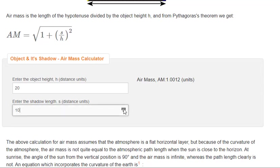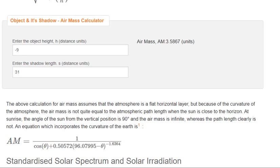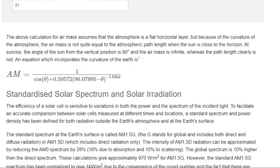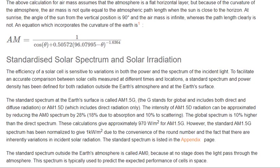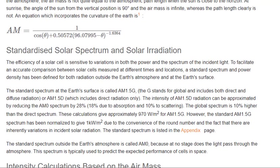The global spectrum is 10% higher than the direct spectrum. These calculations give approximately 970 watts per square meter for AM1.5G. However, the standard AM1.5G spectrum has been normalized to give 1 kilowatt per square meter due to the convenience of the round number and the fact that there are inherently variations in incident solar radiation.